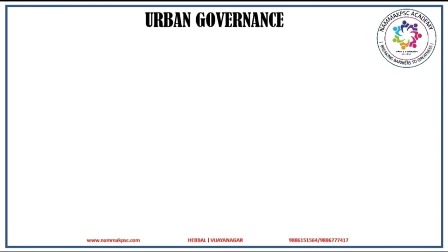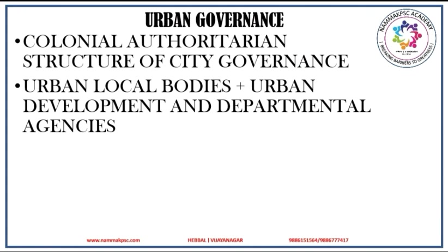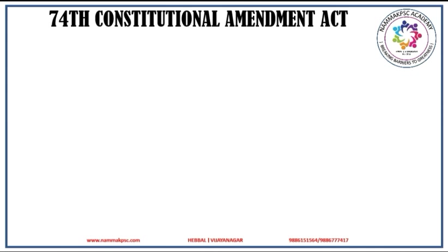Now let us study about urban governance. The structure of urban governance in Karnataka and in India, in the context of local government, stands very far from the philosophy of the constitution and the theory of decentralization. The colonial authoritarian structure of city governance continues to this day with resistance to sharing political power with local urban institutions. Apart from an urban local body, there is a host of parastatal urban development and departmental agencies dealing with urban services. This is particularly so in metropolitan cities where there are separate government agencies dealing with water supply and sewerage, transport, land and infrastructure development, etc. This multi-institutional approach has led to a lack of holistic view of urban development. In this background, the passage of the 74th Constitutional Amendment Act has provided new opportunities for urban governance reforms in the country.